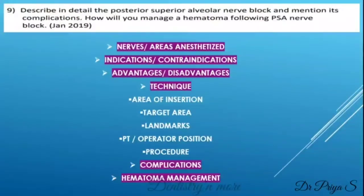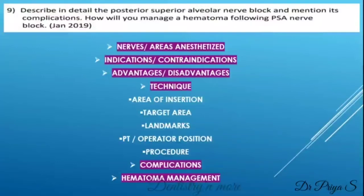Describe in detail the posterior superior alveolar nerve block and mention its complications. Explain the answer under the following headings: nerves and area anesthetized, indications and contraindications, advantages and disadvantages, and the technique itself using the same headings discussed for IANB. List out the complications specific to PSA — do not list all complications of local anesthesia generally. Then explain in detail hematoma following a PSA nerve block, which is given in the chapter on local complications of anesthesia.